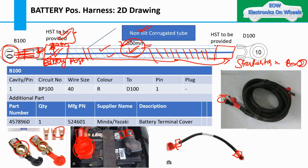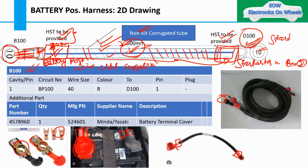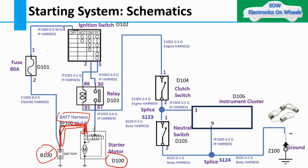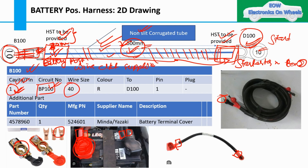Here you will also see the HST to be provided, and then you have the starter motor terminal - D100 in my example. Then we have the circuit list - we call it the wire circuit list - based on which your supplier is going to provide this harness. For cavity one, you take circuit number BP100, then wire size which is the CSA, then the color, where it is coming from and going to - which is the starter motor terminal D100.